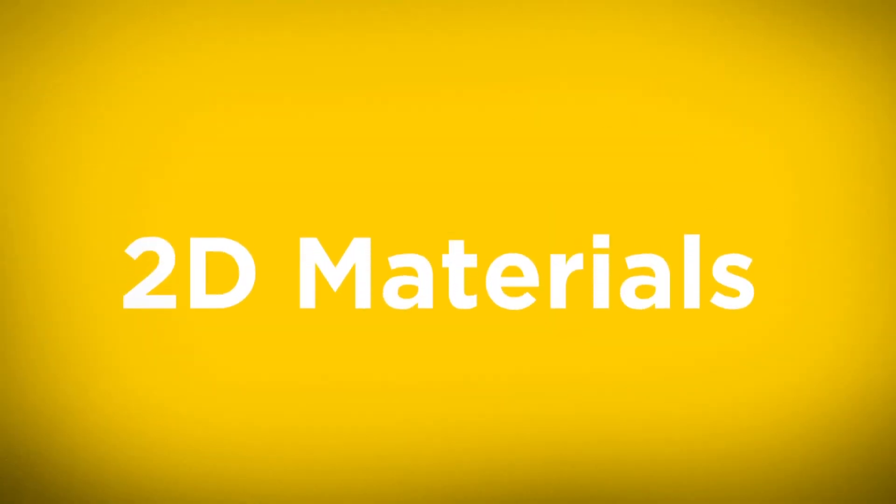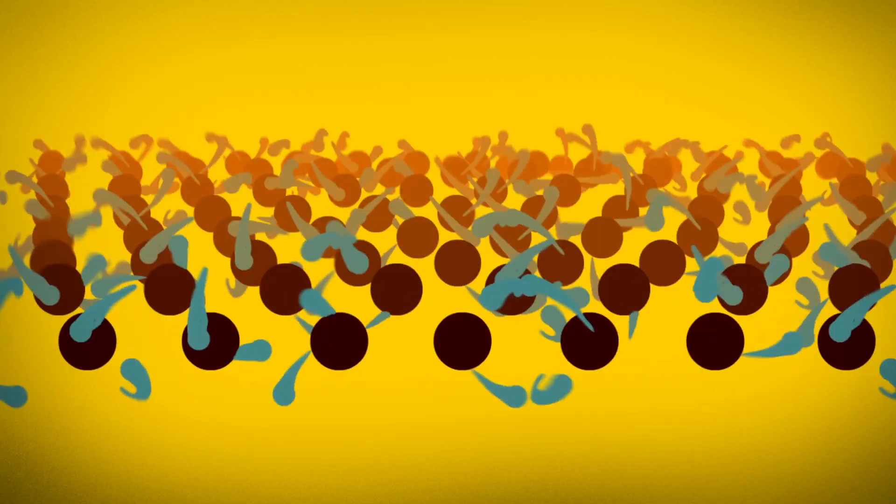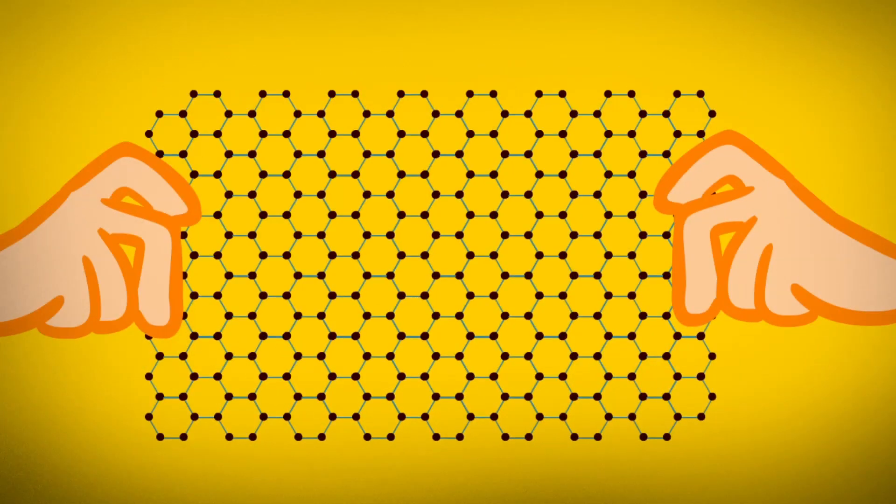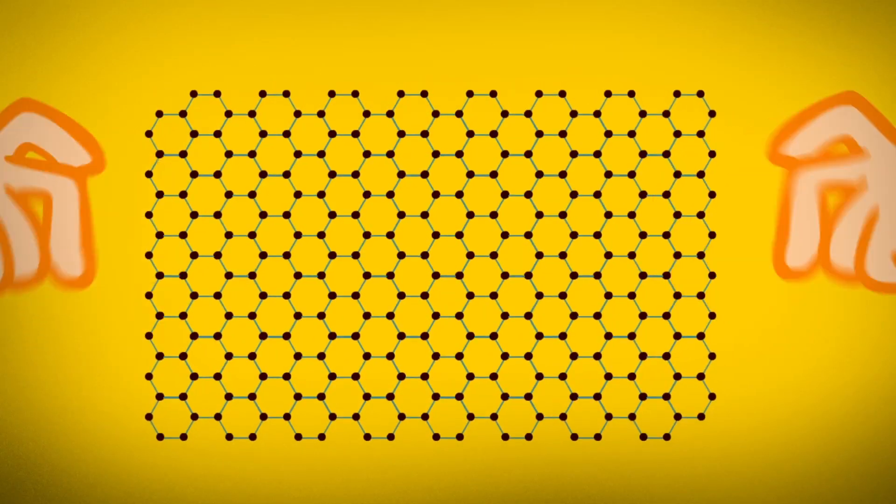2D materials are layers that are just one atom thin, the thinnest object possible. They are transparent, strong, and flexible.